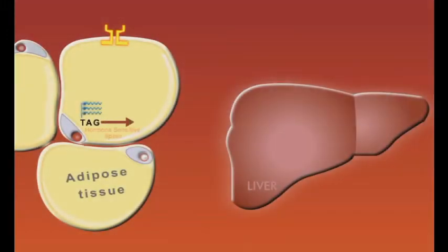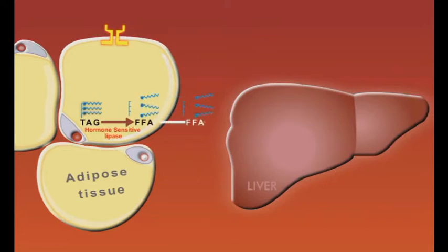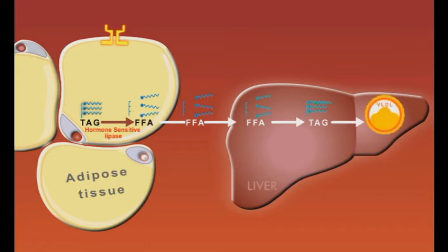Triglycerides stored in adipose tissue cells are broken down into free fatty acids and released into the blood. Liver cells take these free fatty acids and use them to synthesize new triglycerides. These are then packaged in very low-density lipoproteins and released into the plasma.